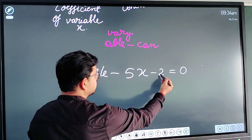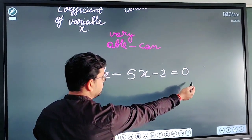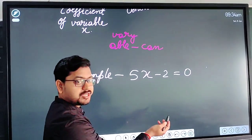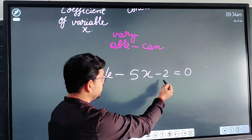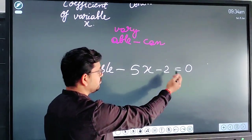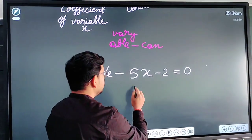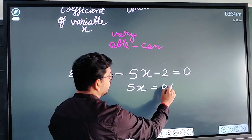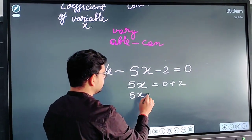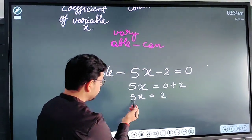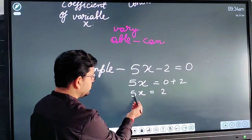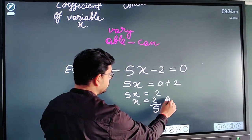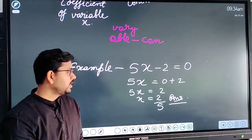So what I will do is, I will send this minus 2 to right hand side and it will be converted into positive 2. So we will perform the same operation. So 5x is equal to 2, which means x is equal to 2/5. So this is the answer of variable x.